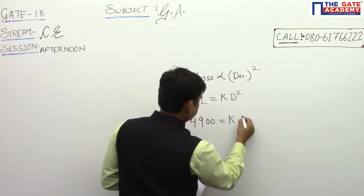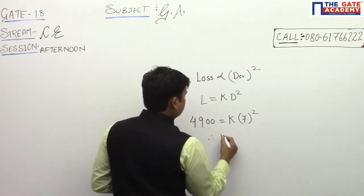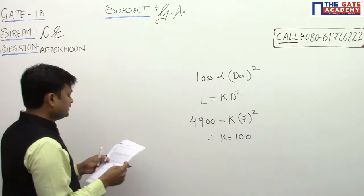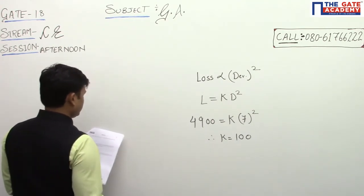If the loss is 4900 for seven unit deviation, this is given, so therefore K will be 100. What would be the loss in rupees for deviation of four units from the target?